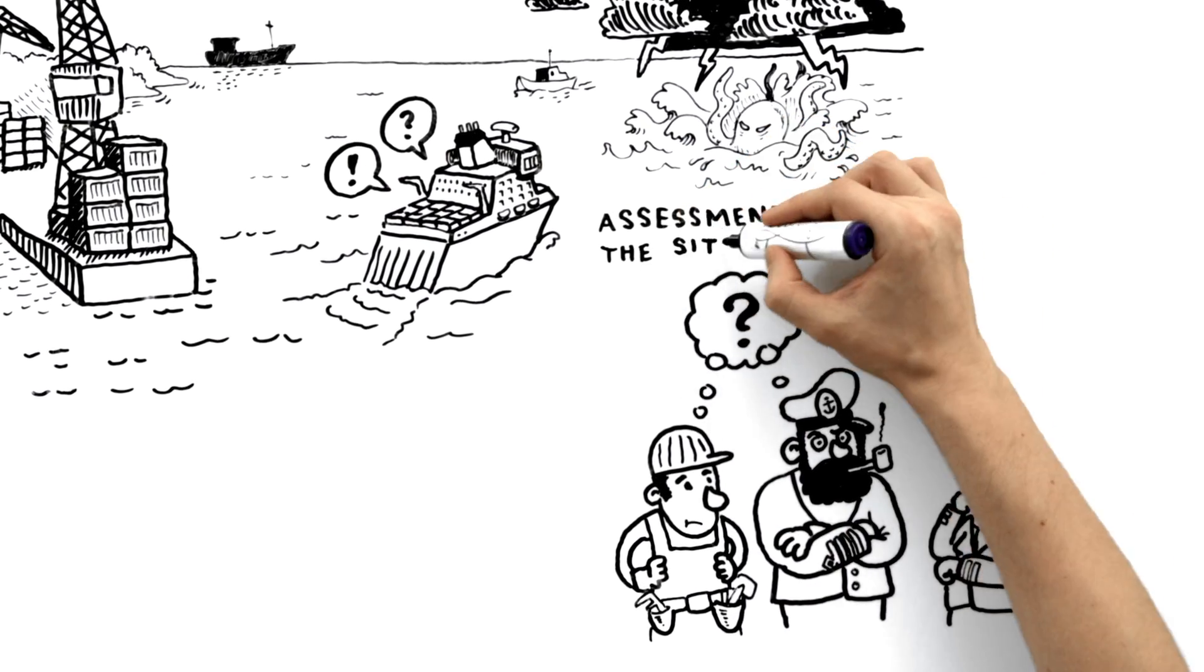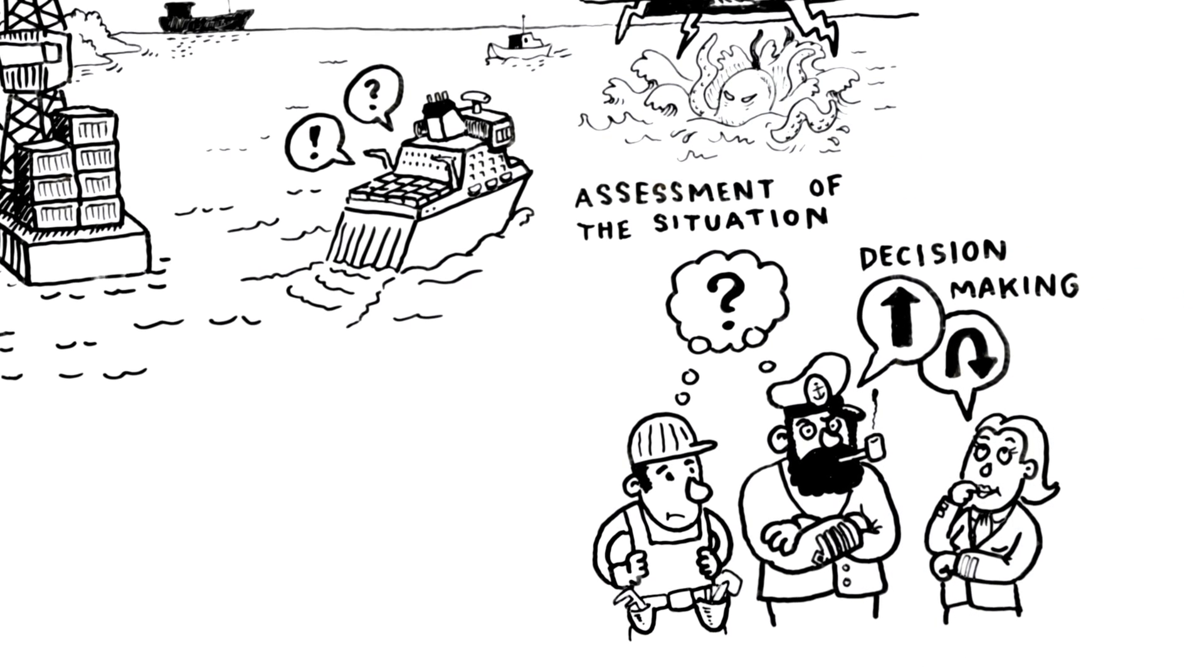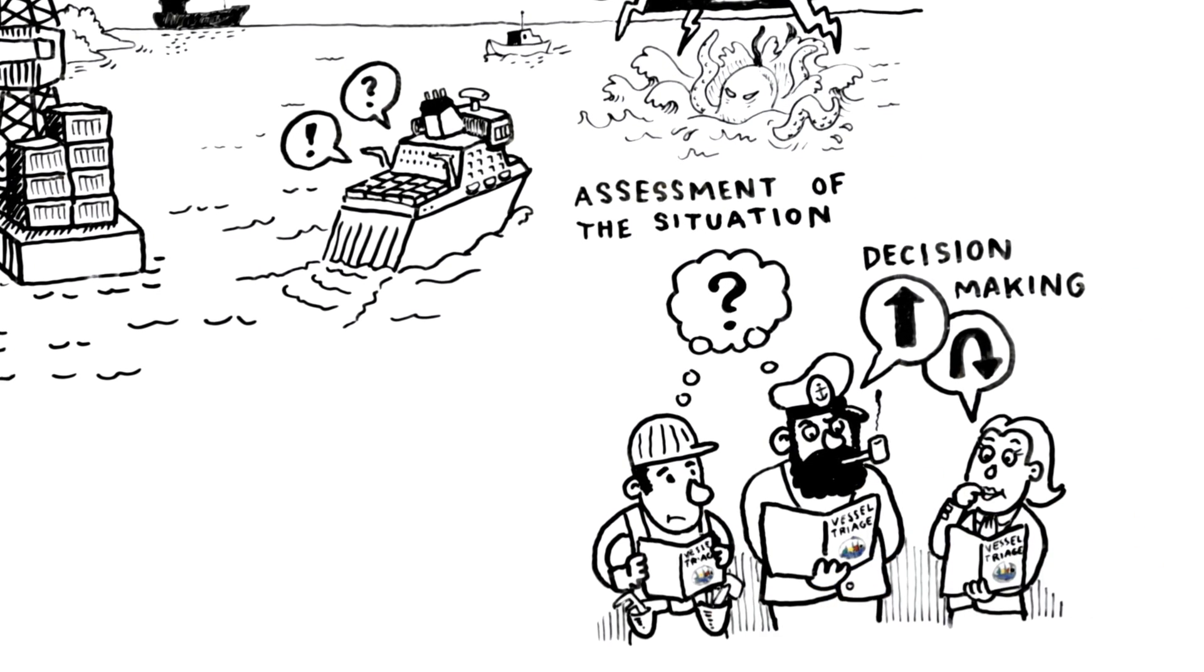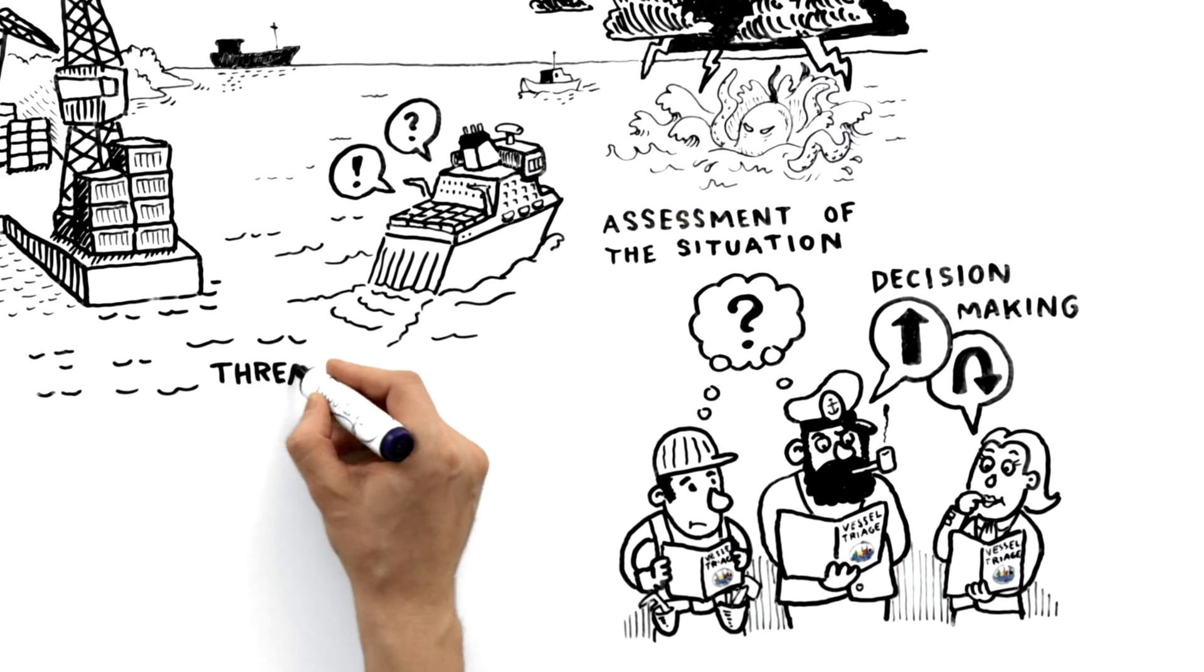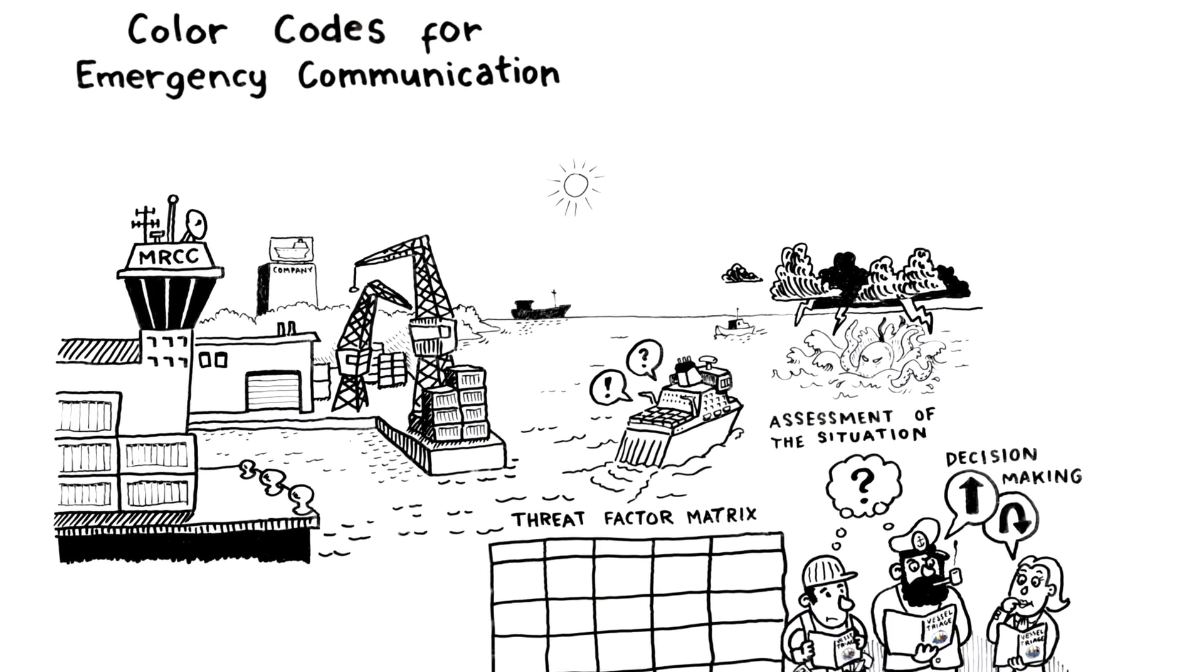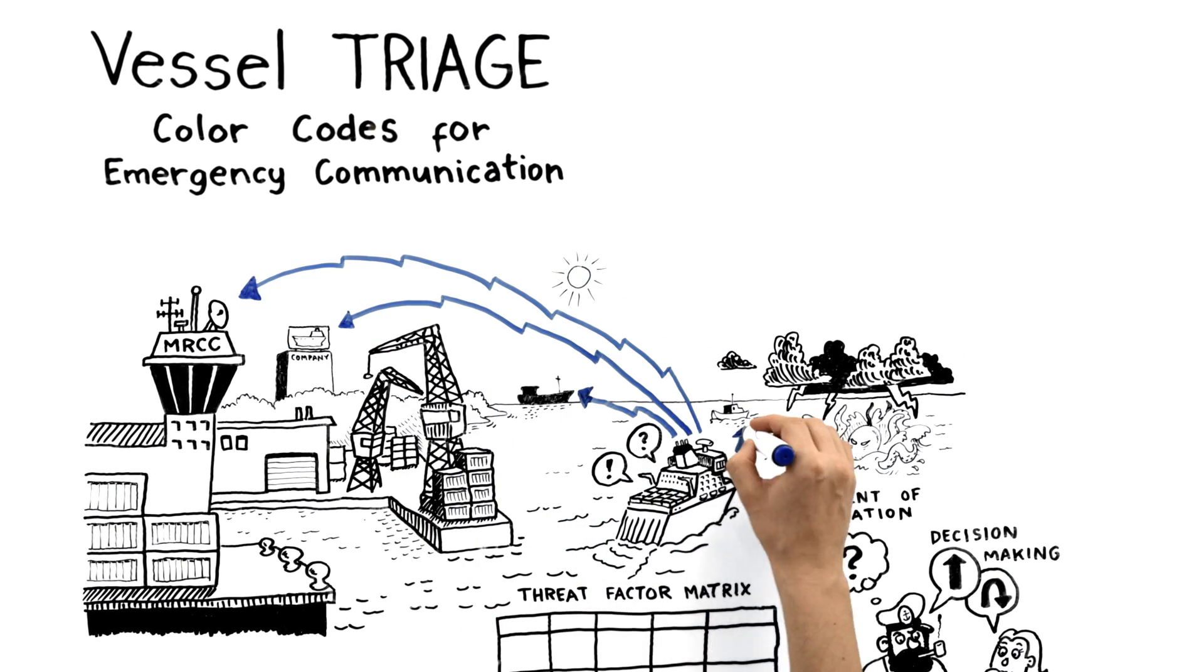This makes it difficult to assess the situation and make decisions. This is where the vessel triage method comes in. By means of a simple threat factor matrix, you can quickly make an objective assessment of a vessel's condition and communicate it immediately to key players.